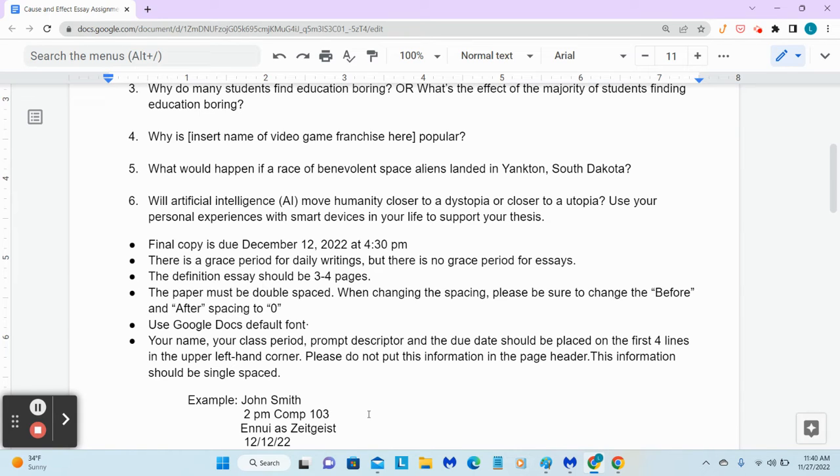And number six is also speculation. Number six is based kind of on my reading, but it's just kind of based on personal experience as well. Will artificial intelligence, AI, move humanity closer to a dystopia or closer to a utopia? Use your personal experiences with smart devices in your life to support your thesis. In other words, why did you think utopia? Why did you think dystopia? For example,